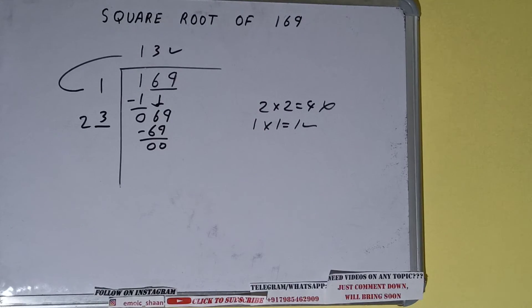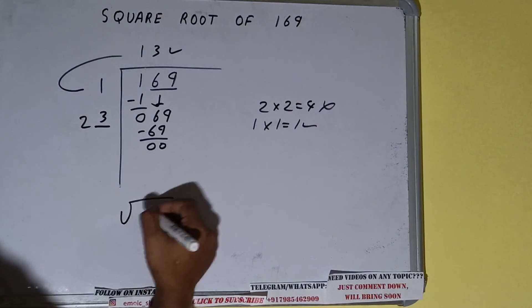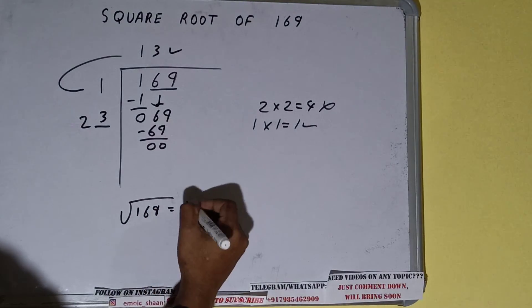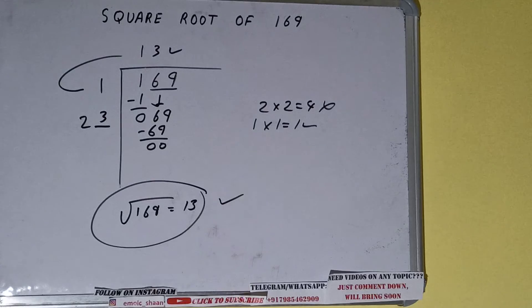Once we get 0, whatever is in the question will be the answer, that is 13. So square root of 169 will be 13. That's it, so this is all.